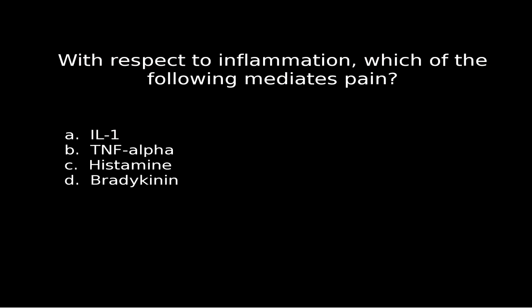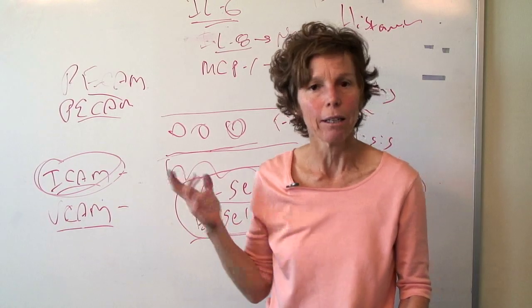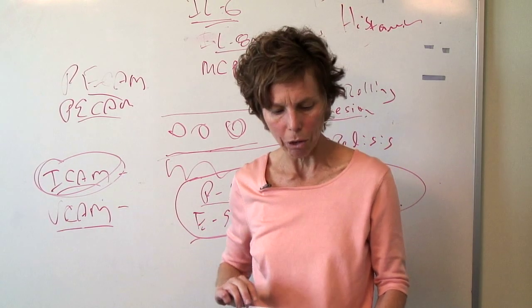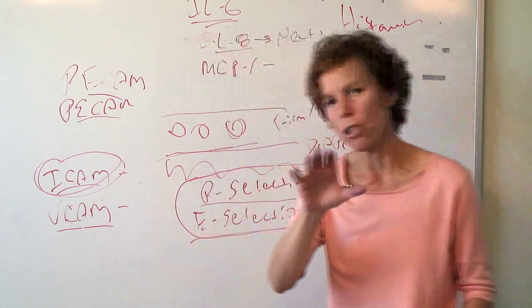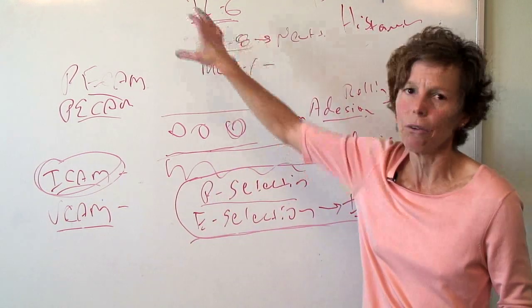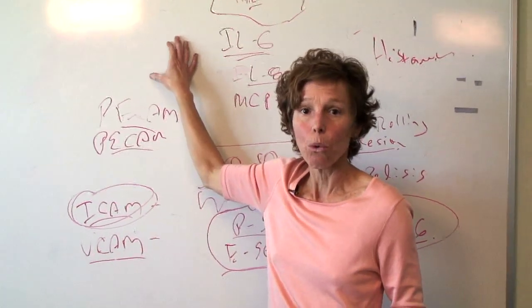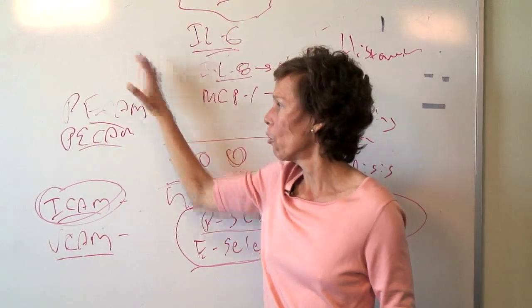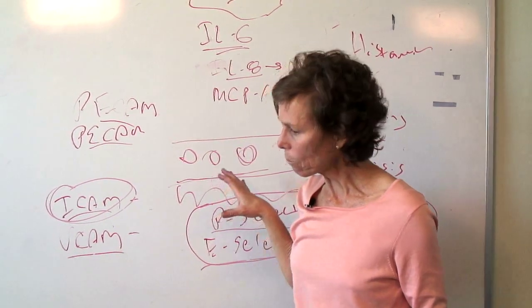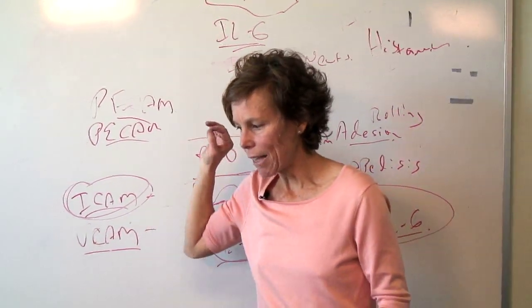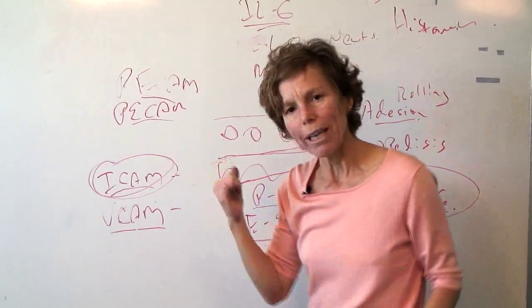Quiz question number one: with respect to inflammation, which of the following mediates pain? The answer is bradykinin. Remember, we got bradykinin because the kallikrein was active and created bradykinin. Something I didn't mention is, if you want to shut down that whole kallikrein process — where you got the C5a or the bradykinin — it's that C1 inhibitor.